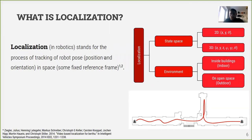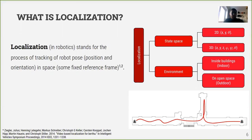Localization can differ in terms of state space. For example, we can have 2D localization with x, y, and a heading angle theta, which is used in wheeled robots moving on flat surfaces where the z coordinate is considered constant. There is also 3D localization for quadcopters or flying robots, where we also need the z coordinate and all three orientation angles. Additionally, there are different approaches depending on whether the robot is moving inside buildings — indoor localization — or outside — outdoor localization.